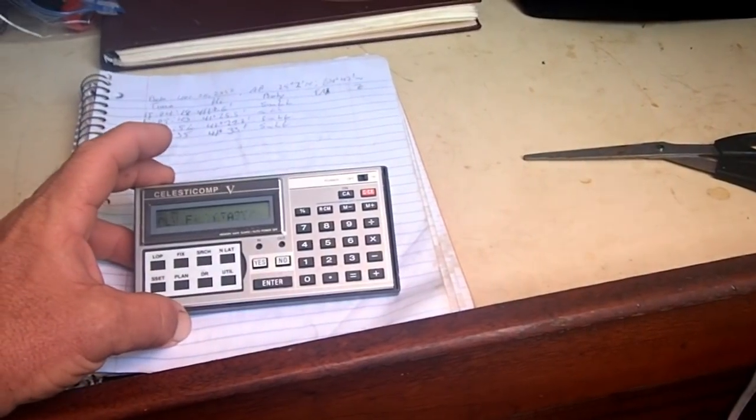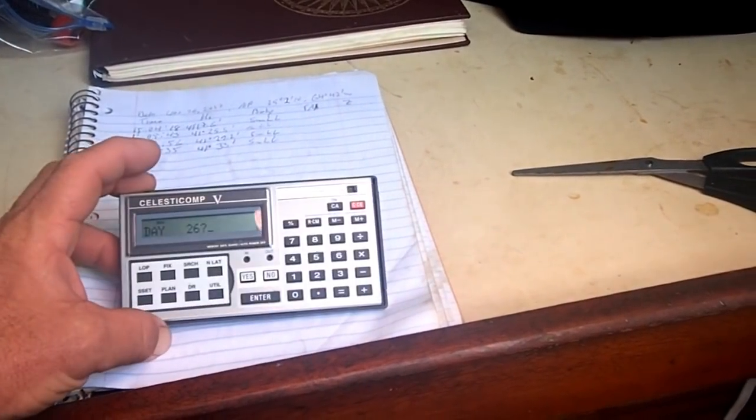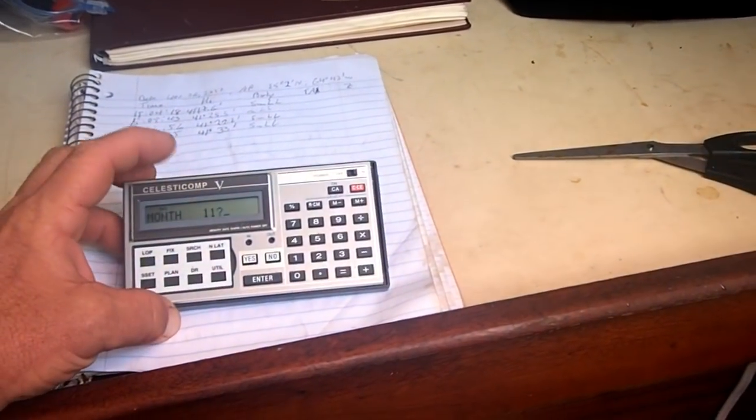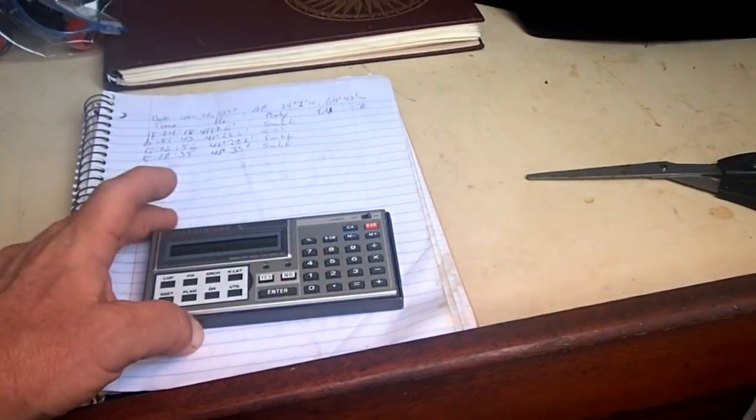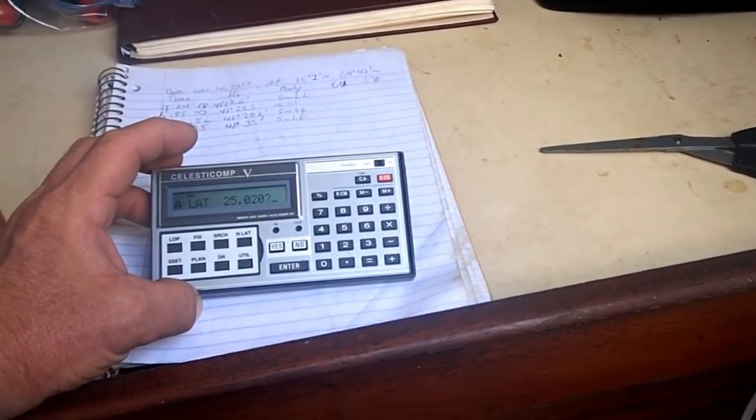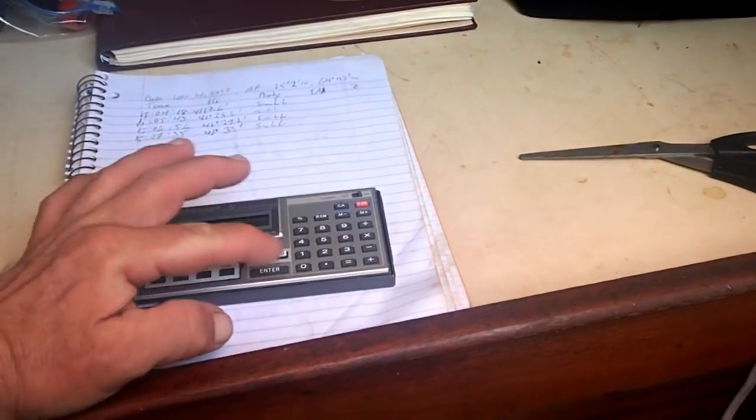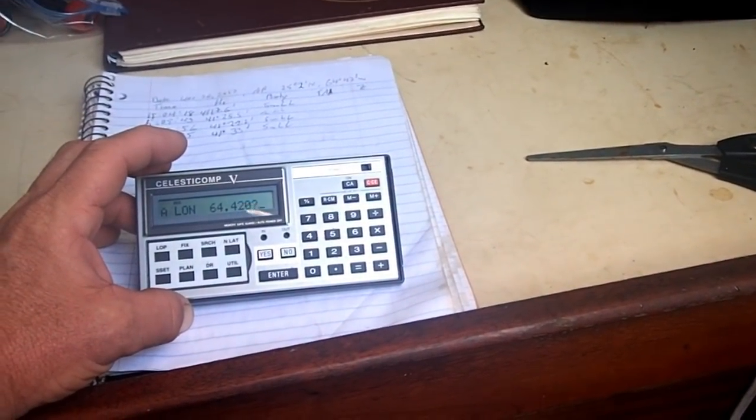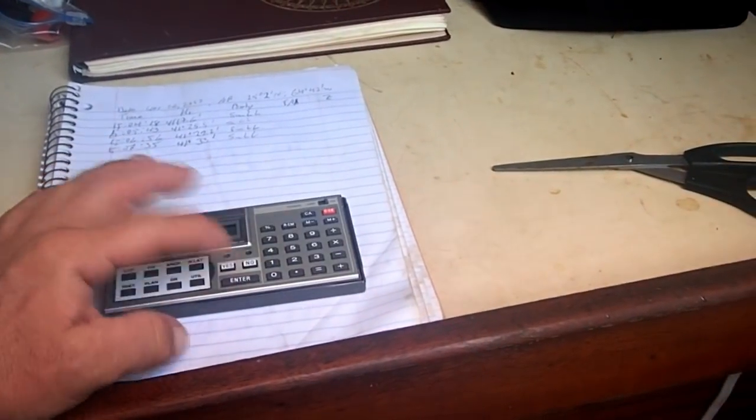New fix, yes, review data, yes, day, it is the 26th of November, enter, month 11, November, this is 2017. Our assumed latitude is 25 degrees 2 minutes north, and assumed longitude is 64, 42 degrees west.